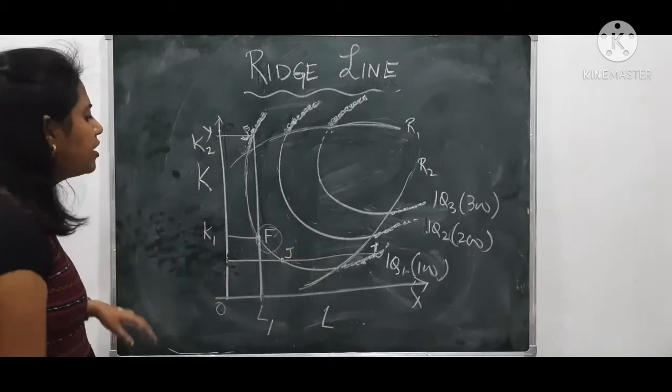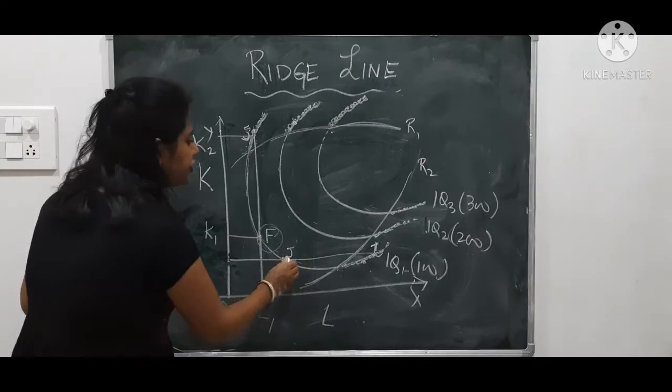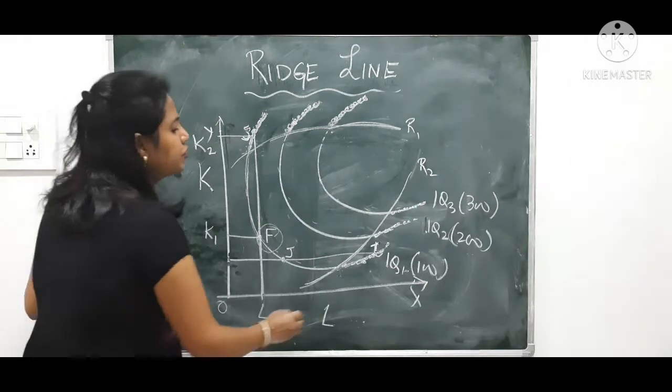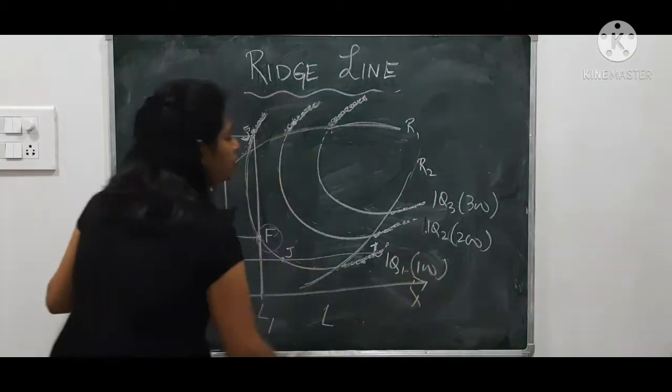Now, J is efficient or T is efficient? Of course, J and T both can produce the same quantity of output 100.